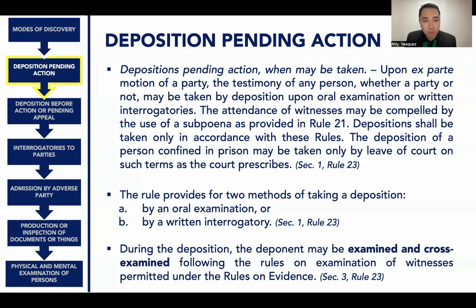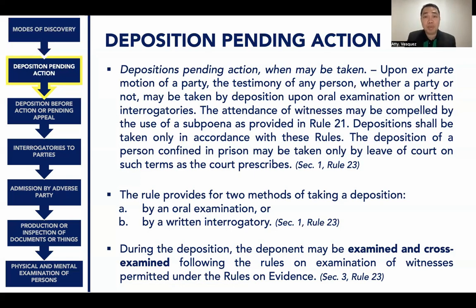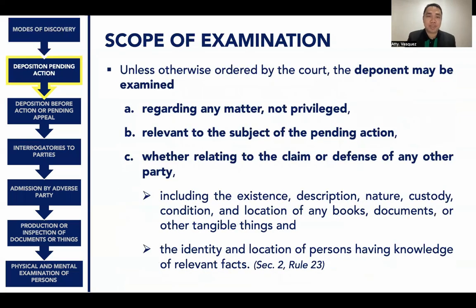Under Rule 23, there are two methods of taking deposition: by oral examination or by written interrogatories. During deposition, the deponent may be examined and cross-examined following the rules on examination of witnesses permitted under the Rules on Evidence. Unless otherwise provided by the court, the deponent may be examined regarding any matter that is not privileged.